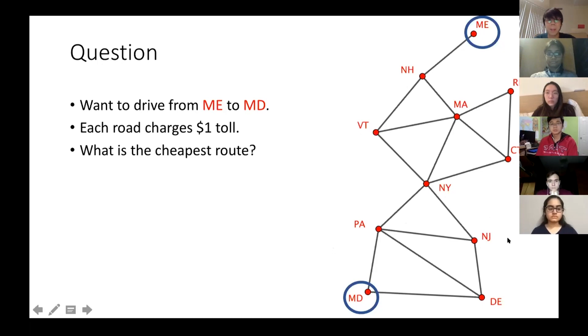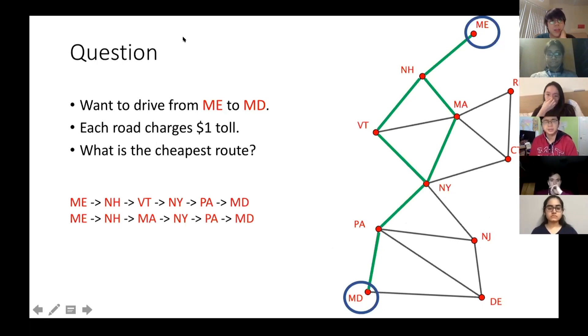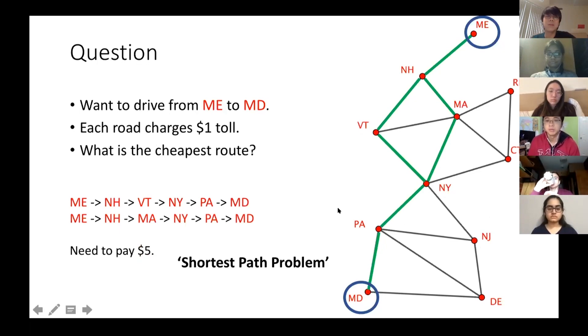You can go along the left edges: New Hampshire, Vermont, New York, Pennsylvania, and Maryland. Yeah, that's perfect. There are actually two cheapest routes here, which are indicated by the green lines. Whatever route you take, you need to pay $5. This is what we call the shortest path problem. I will explain it in a minute. But if you guys have any questions, if you don't understand the graph, you can ask me.